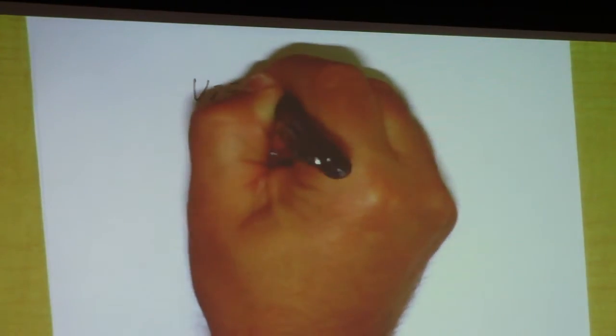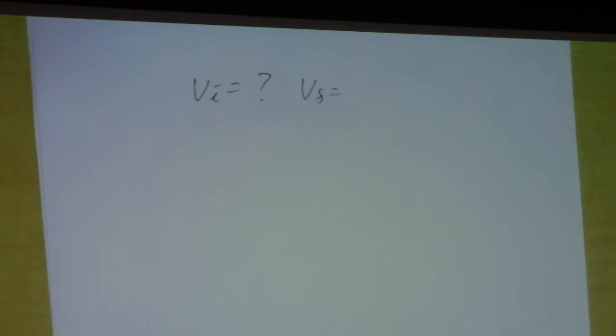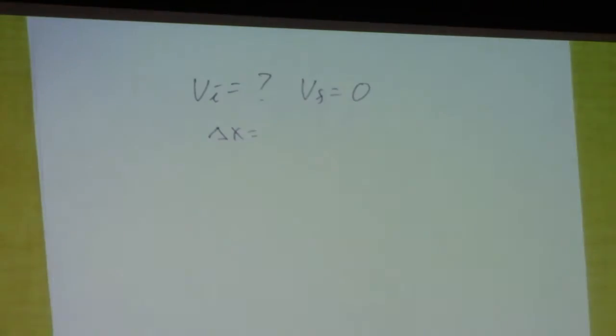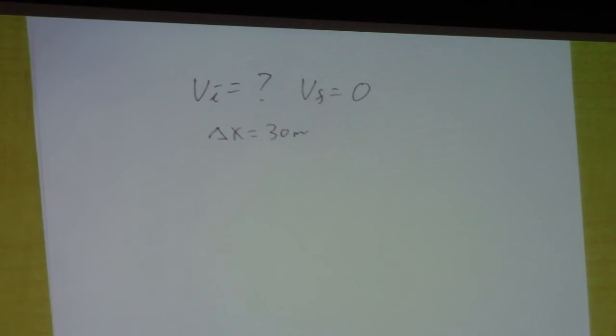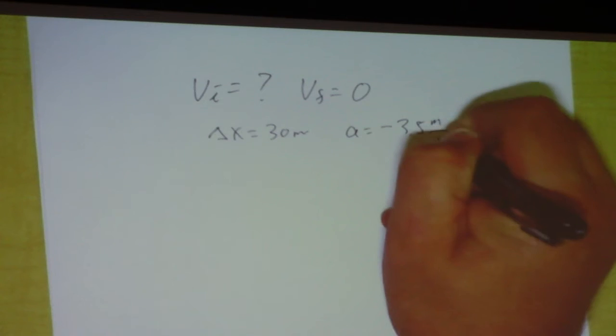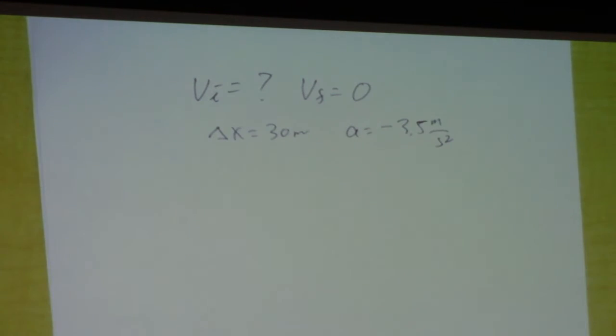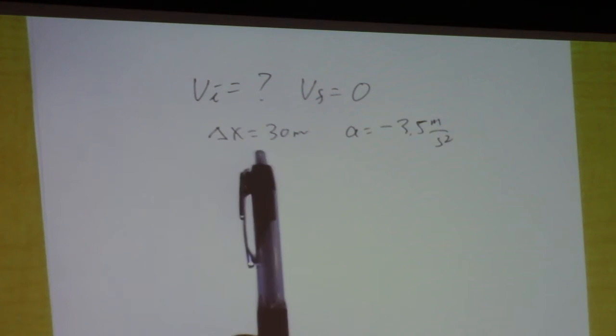So we're looking for the original speed, the initial speed. How much is the final speed? You've got to read it carefully, it comes to a stop. Zero. This happens over a displacement of 30 meters, and we're slowing down with this magnitude of acceleration. So this technically is negative, right, because you're slowing down.